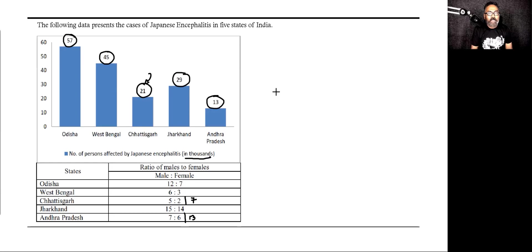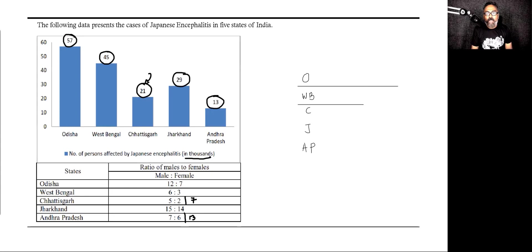So we have got Odisha, West Bengal, Chhattisgarh, Jharkhand, and Andhra Pradesh. Let's create this table, ladies and gentlemen.